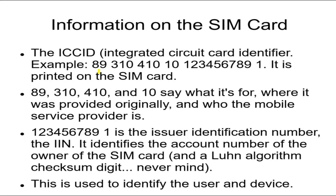This is a series of numbers: 89, 33, 10, 410. The first couple of them deal with where it was originally provided and who the mobile service provider is. The sequential digits — 1, 2, 3, 4, 5, 6, 7, 8, 9 — represent the identification of the person who bought the SIM card.